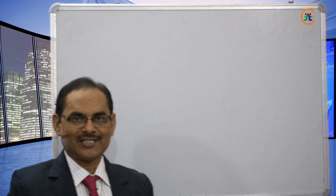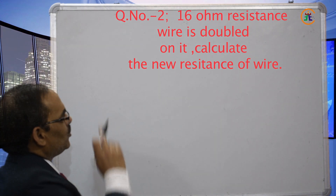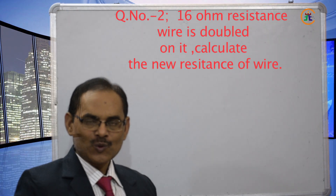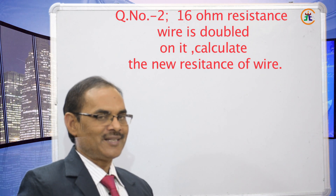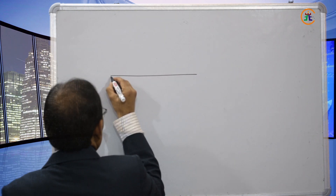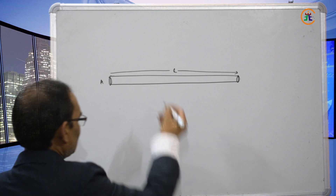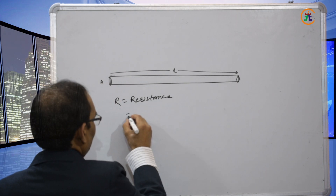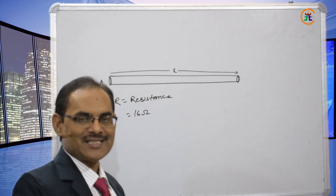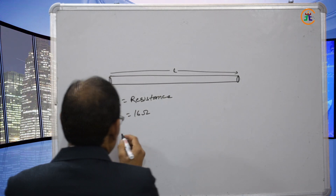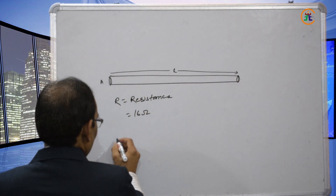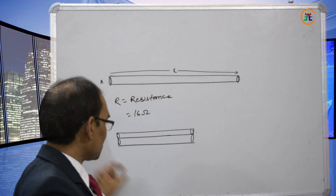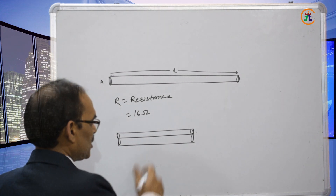Question 2: A 16-ohm resistance wire is doubled on itself — calculate the new resistance. The resistance of the wire is R = 16Ω and the length is l. When the wire is folded (doubled on itself), the new length becomes half: l' = l/2.